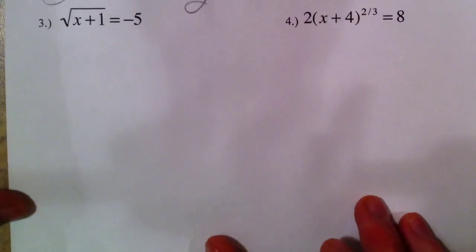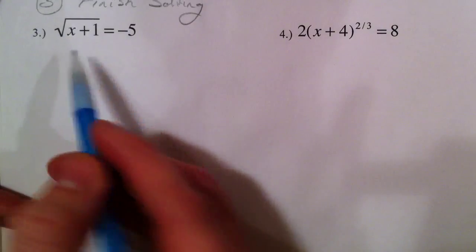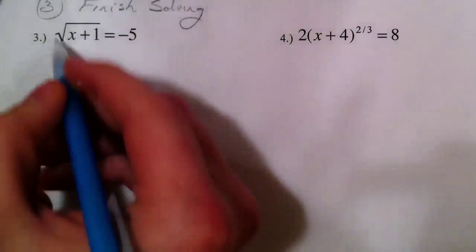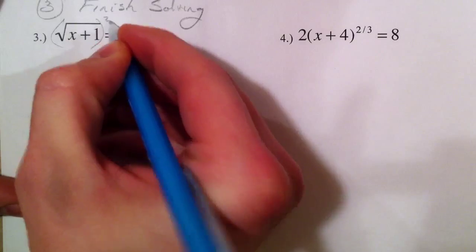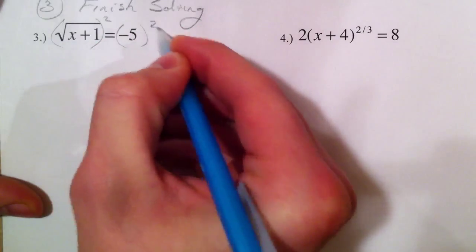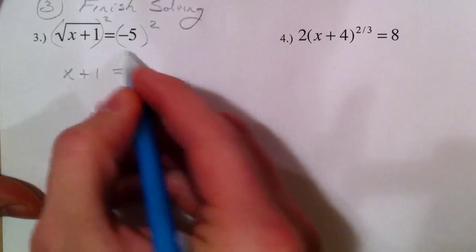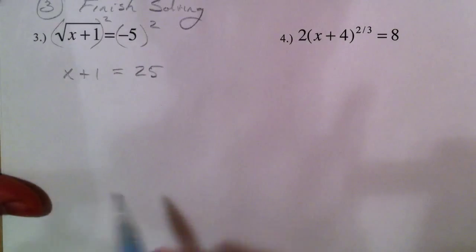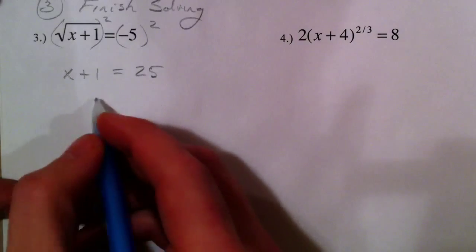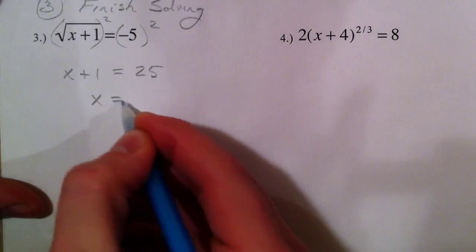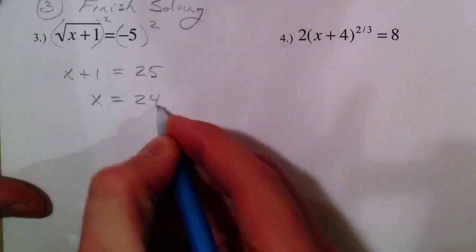For example, to undo the square root, you have to square both sides. When you square both sides, you get x plus 1 equals 25. Fair enough. Doesn't seem like there's anything wrong with it. Subtract the 1, you get x equals 24.